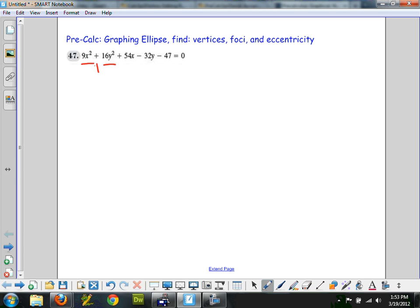Okay, that's not absolutely true. Let me clarify that. If they're both the same sign, both positive or both negative on the x squared and y squared, and the coefficients, 9 and 16 in this case, are different, that guarantees we have an ellipse.